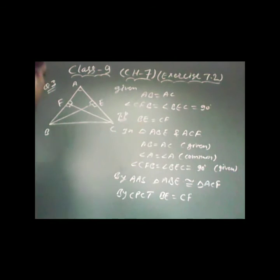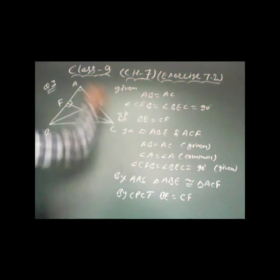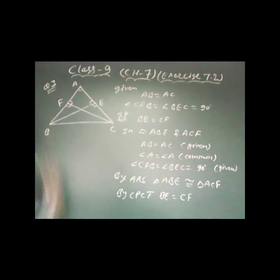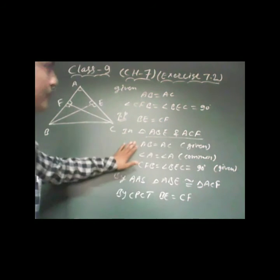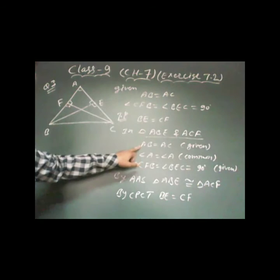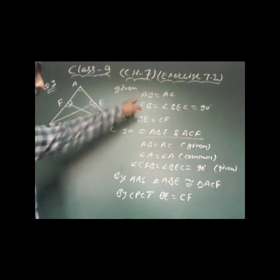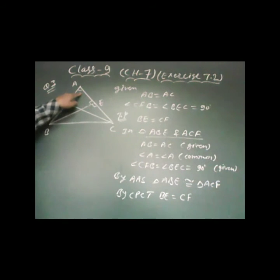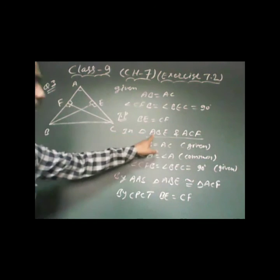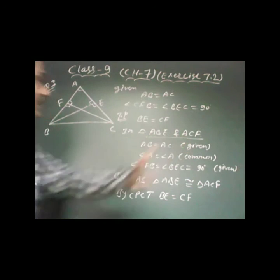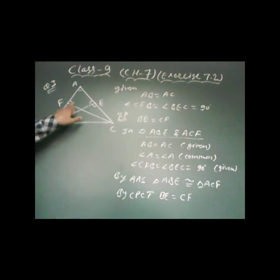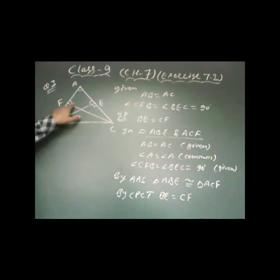To prove BD equals CF, we prove triangle ABE and triangle ACF are congruent. The corresponding parts are: AB is equal to AC (given), angle A is common, and angle ABE equals angle ACF equals 90 degrees. By AAS congruence, triangle ABE is congruent to triangle ACF, and by CPCT, BD is equal to CF.